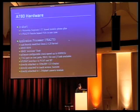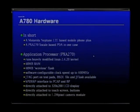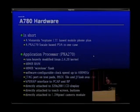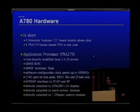In short, it is a Neptune LTE-based mobile phone plus a PXA270-based PDA in one case — at least two totally separate devices on one PCB that talk to each other with no real integration. The Neptune LTE chipset is also found in non-smartphones from Motorola like the RAZR or E398 — the same chipset, very similar software. They just took an existing phone design and put a PDA in front of it, interconnected over USB.